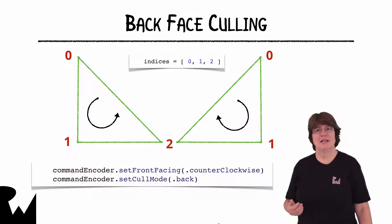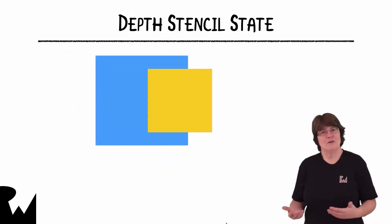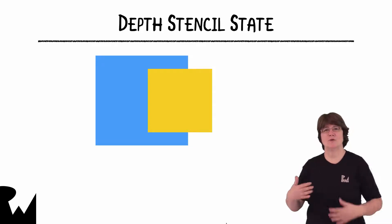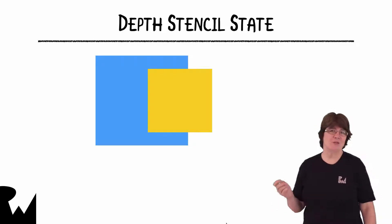So with backface culling on, we only render those triangles that are facing towards us. However, rendering only front-facing triangles still doesn't take into account depth. We have to tell the GPU how to measure depth. And we do this using a depth stencil state.